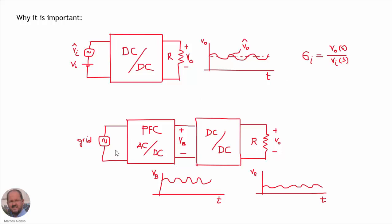A typical situation is as follows: we can have the grid, a power factor correction stage to generate a DC voltage, but on this DC voltage we will always have a ripple superposed to the DC level. With the audio susceptibility transfer function, we can know how this ripple is going to be transferred to the output of the converter and superposed to the DC level of the output voltage. Also, with the audio susceptibility transfer function, we can know how the output voltage will behave if we apply a step up or step down voltage at the input.